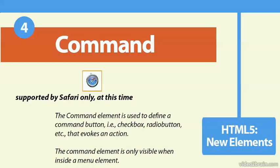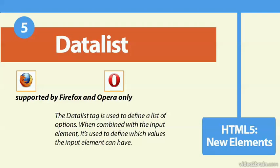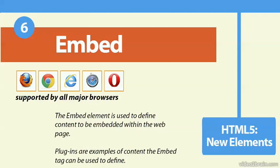The command tag is supported only by Safari at this time, and it's used for a command button that evokes an action, such as a form element like a checkbox or a radio button. The data list is supported only by Firefox and Opera at this time, and it's used to define a list of options. The embed tag is supported by all the major browsers, and it's used to define content that is going to be embedded within the web page, such as a plug-in that's needed to display your content properly.